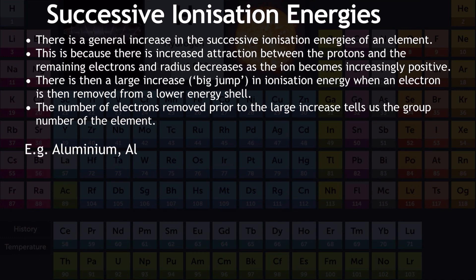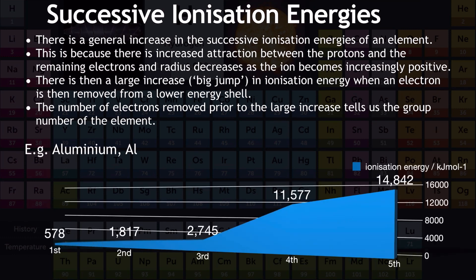Next, we look at successive ionization energies — removing all electrons one at a time from an individual element. There is a general increase in the energy required as we move from the first to the second to the third ionization energy and onwards. Looking at the chart for aluminium, more energy is required with each successive removal. This is because there is increased attraction between the protons and the remaining electrons after each outer electron is removed, and the radius decreases as the ion becomes increasingly positive.